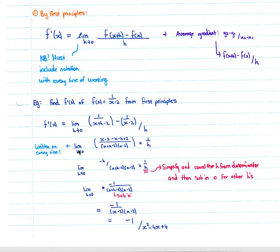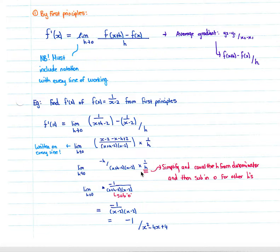Remember to include your notation with every line of working. As you can see, with every line of working we include the limit as h tends to zero. We then simplify our algebraic fraction by getting a common denominator from these two denominators and multiply through to get one fraction on top divided by h. We simplify to get a negative h on the top over our denominator times one over h, since dividing by h is the same as multiplying by one over h.